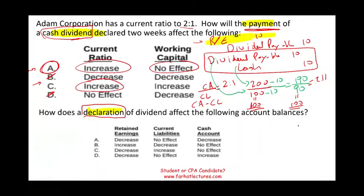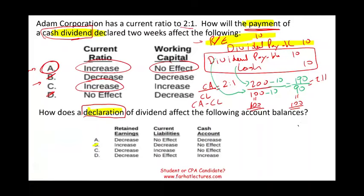Here's the entry: we debit retained earnings and credit dividend payable. When we debit retained earnings, retained earnings go down. So we can eliminate B, because B says retained earnings increase — and we're left with A, C, and D. Current liabilities went up when we declared the dividend. Therefore, no effect is out. The answer is C, based on this basic journal entry from financial accounting.